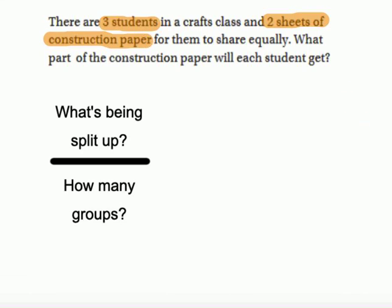So we have to identify first, what is being split up in this story problem? Well, the two sheets of construction paper are being split up. Then we have our fraction bar, which means divide. And then how many groups are we splitting that construction paper up into? We're splitting it into three groups.